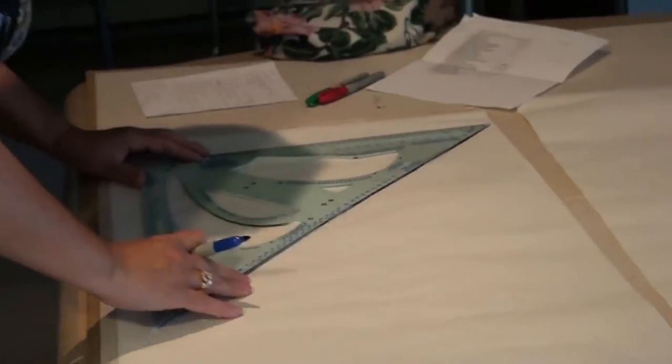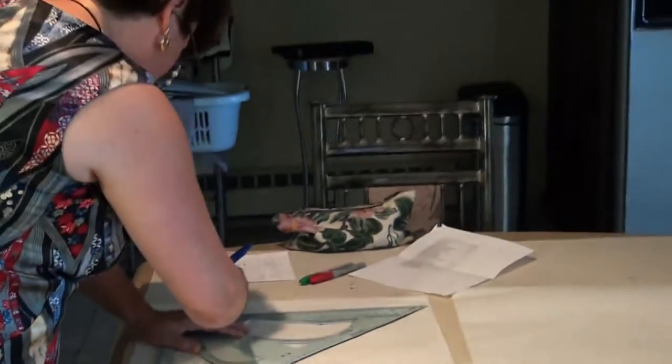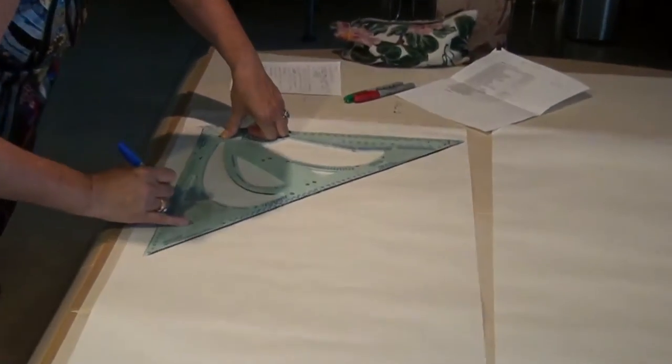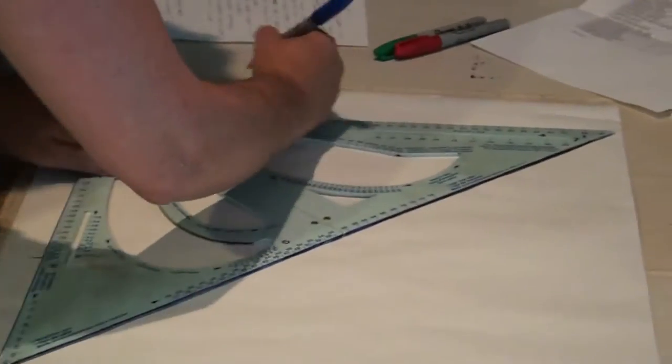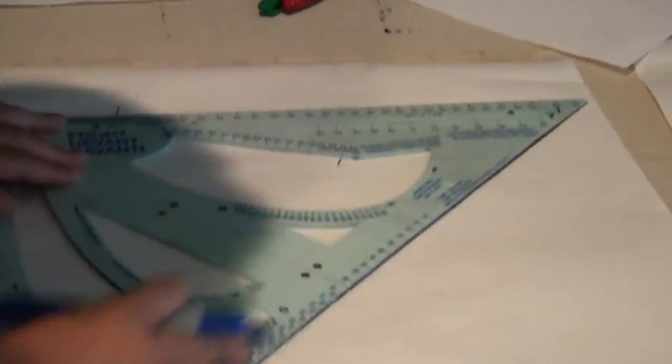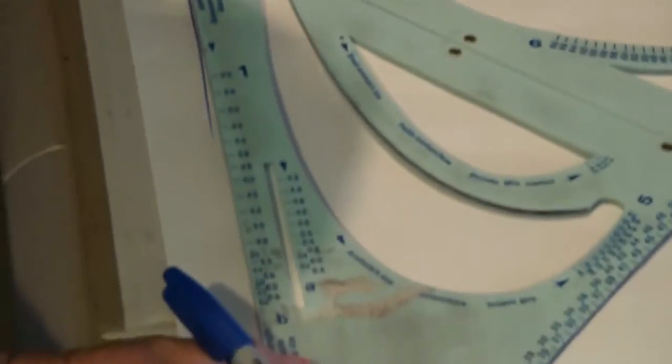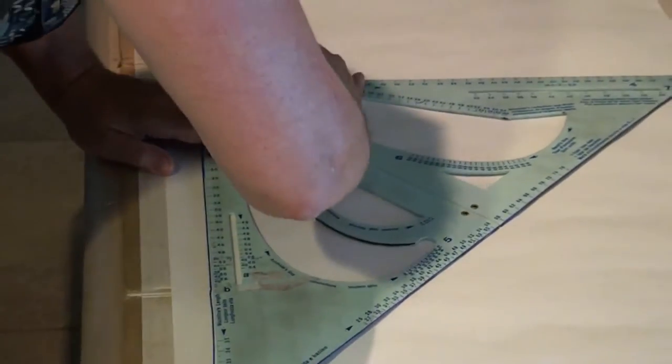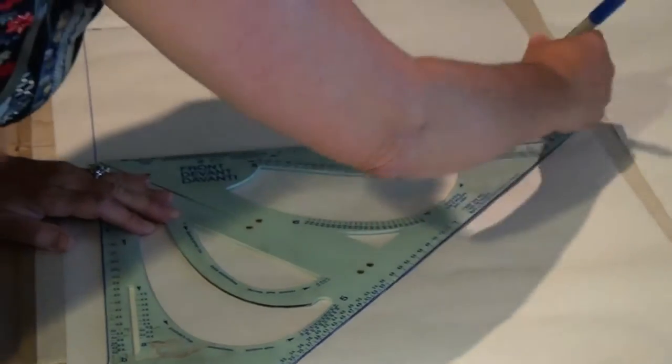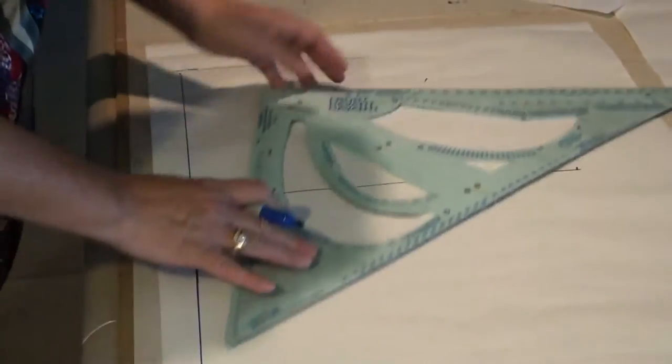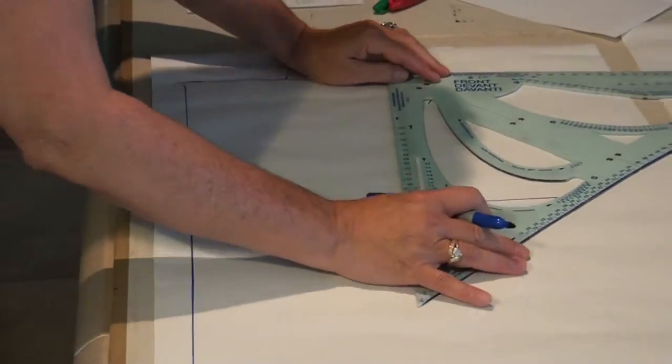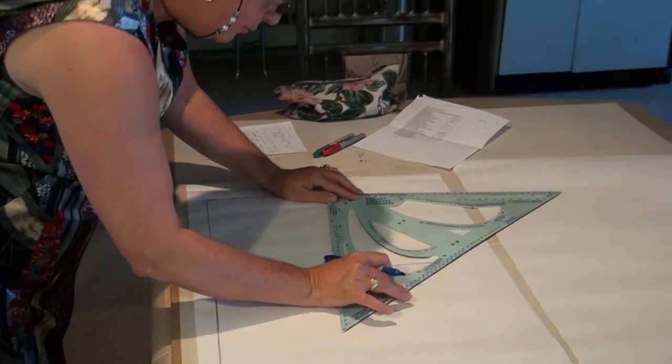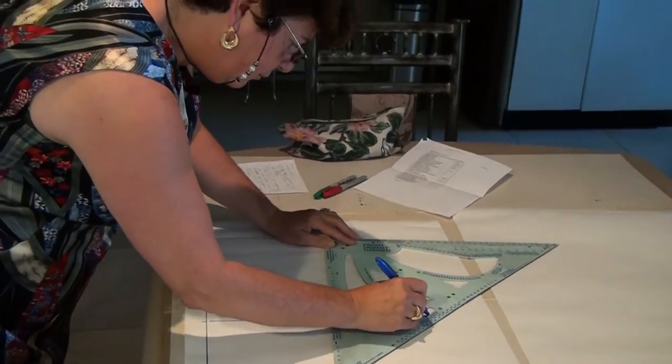Alright, so I'm using the half bust measurement, which in this case is 61. My drafting two step is one, two, three, slide.